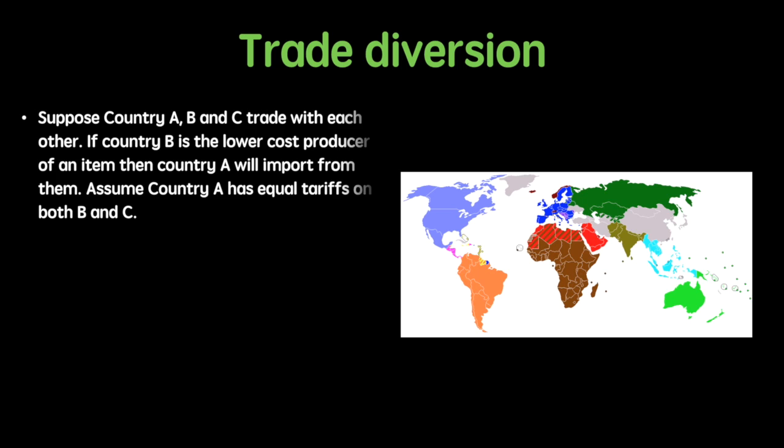Suppose countries A, B, and C trade with each other. If country B is the lowest cost producer of an item, then country A will import from them. Assume country A has equal tariffs on both B and C.